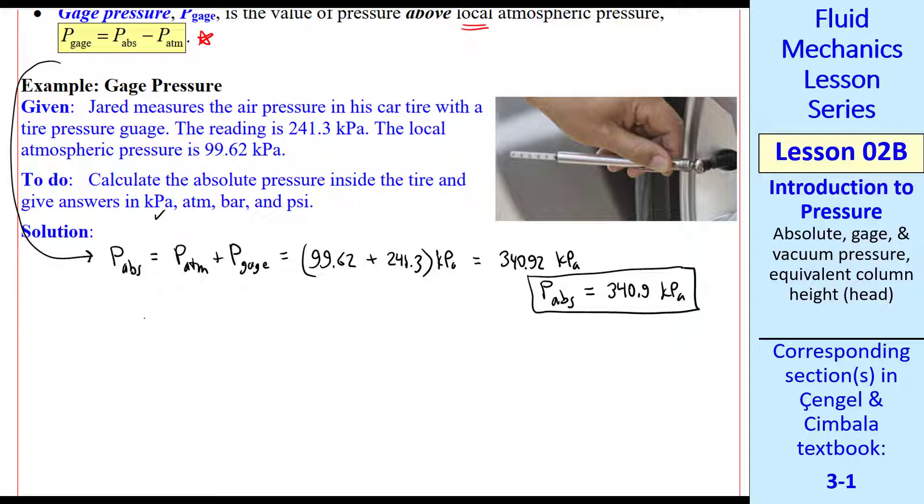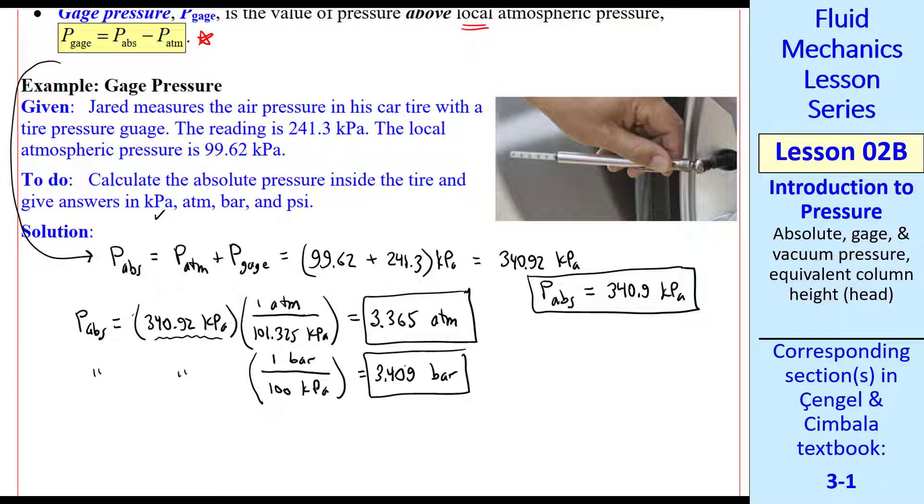To convert to these other units, we use unity conversion factors. We plug in our P abs using all the digits we have available to avoid roundoff error, and then use a unity conversion factor. One atmosphere is 101.325 kPa. I'll keep four significant digits, and we get 3.365 as our answer in atmospheres. We do the same thing with bars. One bar is defined as 100 kPa, so our answer is 3.409 bar. Notice that the units of atmosphere and bar are very close, but they're not exact. Now let's do psi. You can look up this unity conversion factor. I get 49.45 psi.